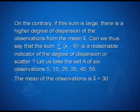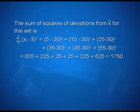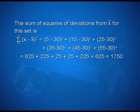Let us take set A of 6 observations: 5, 15, 25, 35, 45, and 55. The mean of the observations is x-bar equal to 30. The sum of squares of deviations from x-bar for this set is (5 minus 30)² + (15 minus 30)² + (25 minus 30)² and so on, which equals 625 plus 225 plus 25 plus 25 plus 225 plus 625, giving us 1750.